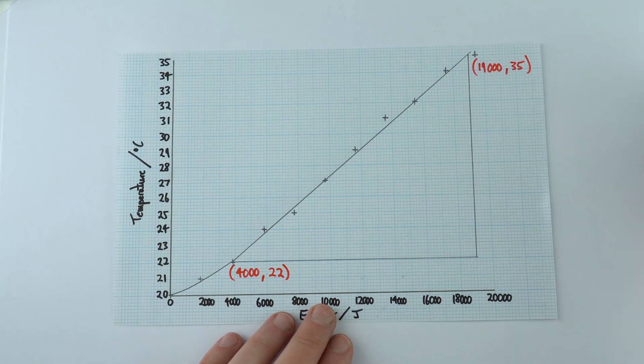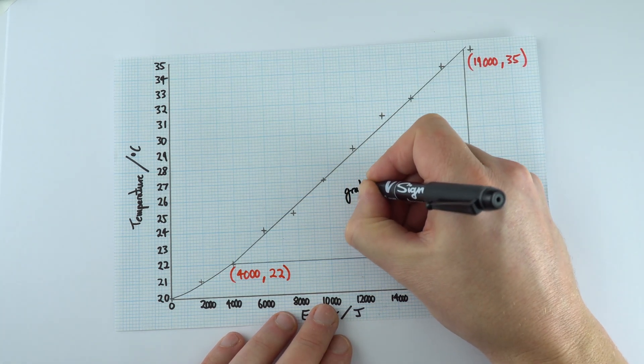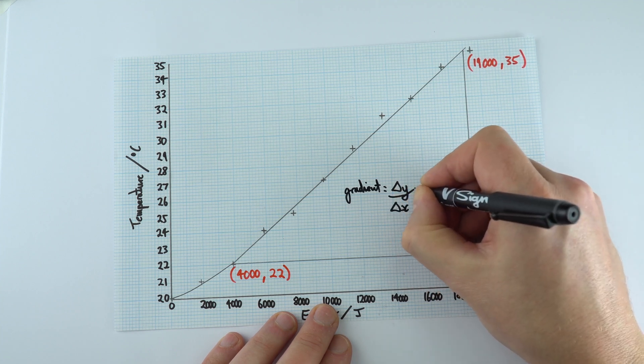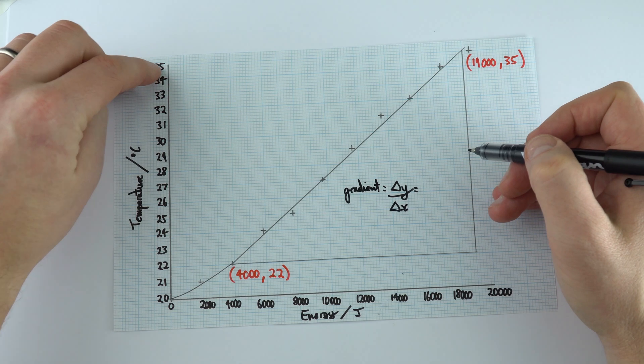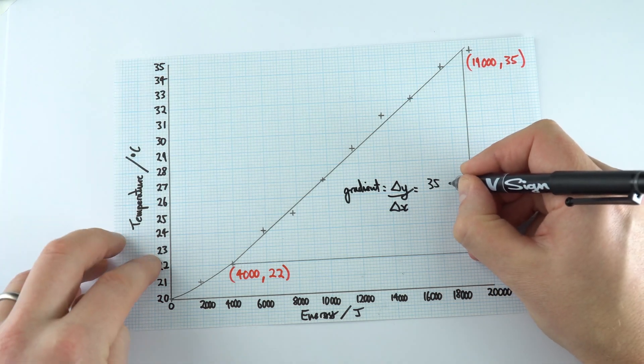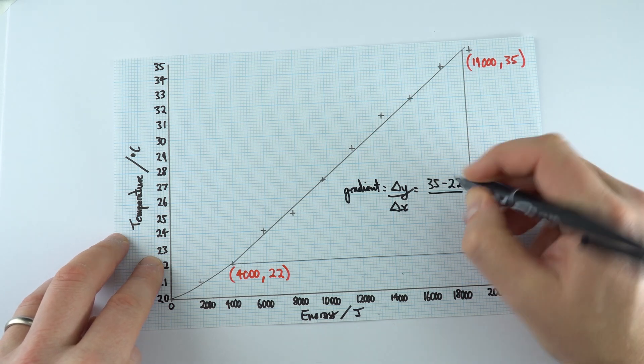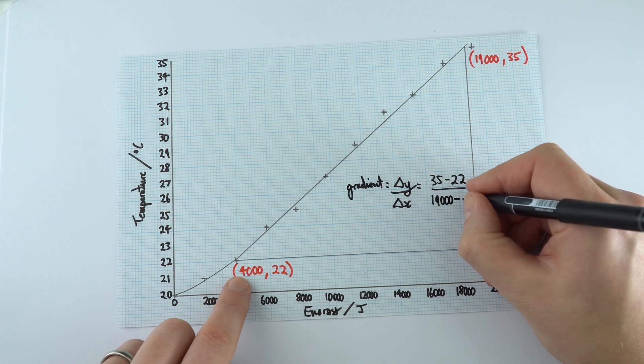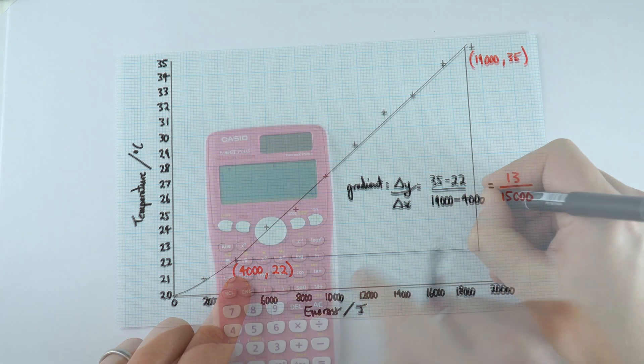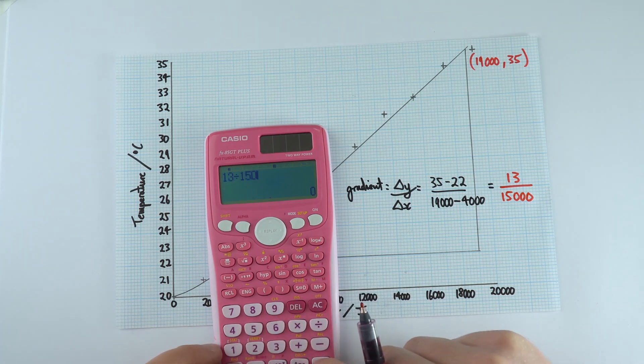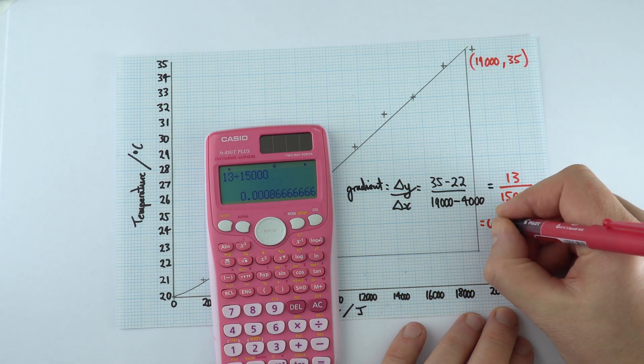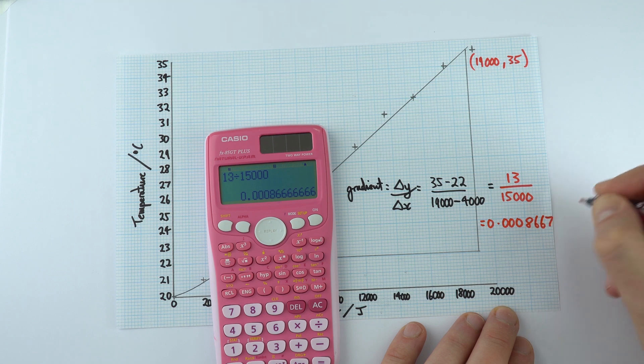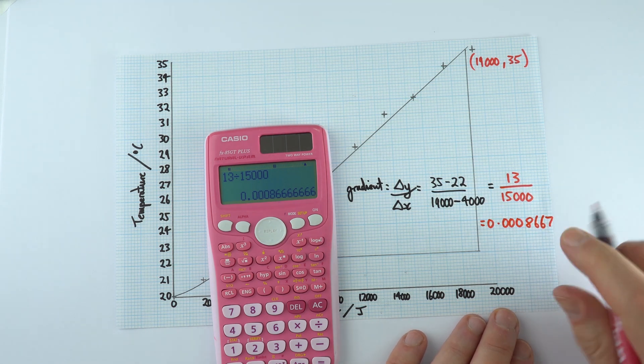So in order to work out the gradient, the gradient is equal to the change in y value divided by the change in x value. Now the change in y value goes from 35 take away 22, and we're going to divide that by the change in x value, which was 19,000 take away 4,000, which equals 13 divided by 15,000, which equals 0.0008667. So this is a value for my gradient.